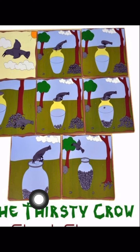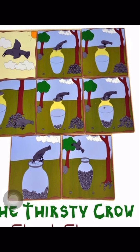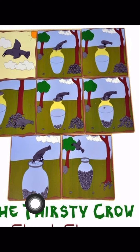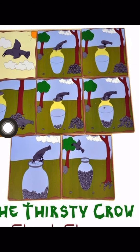Theere theere karke sabhi pathar pot mein chale gaye. If you want to try this at home, take a small glass with half a glass of water — you don't need to fill it fully. Then put some stones in that — thode pathar daalne hain. Slowly slowly the water will come upward — upar aa jaega. As the stones went inside, the water rose up — crow ne water drink kar liya. And he flew away again into the sky — vaapis udke jungle mein chala gaya.